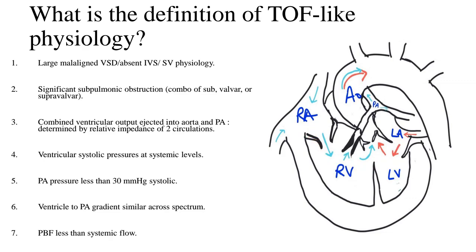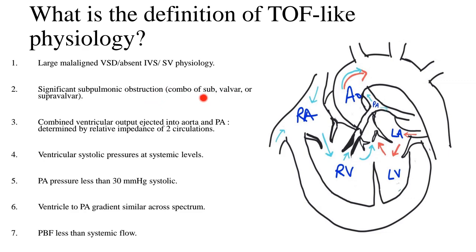To call any lesion TOF-like, there are certain prerequisites that have to be checked off. Number one: the VSD is usually large, mal-aligned, or it may be so large that the interventricular septum is almost absent, or the physiology may be like a single ventricle. The second prerequisite is that there should be significant sub-pulmonic obstruction, and this obstruction can be a combination of subvalvar, valvar, or supravalvar.